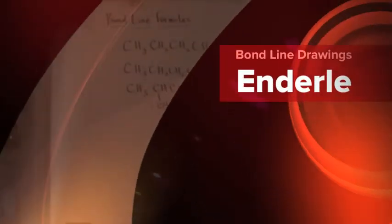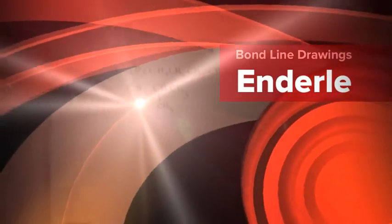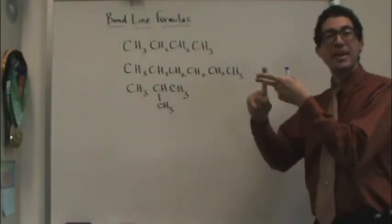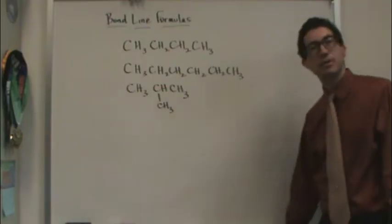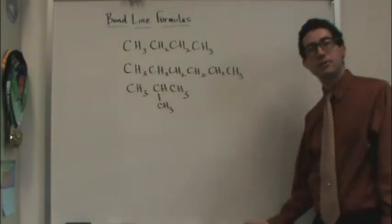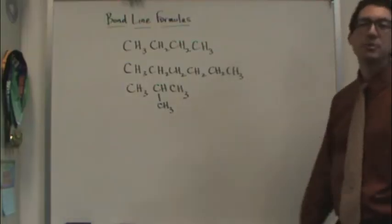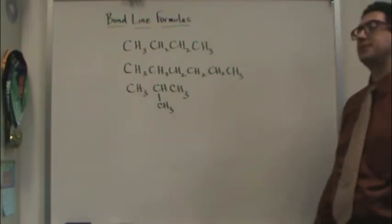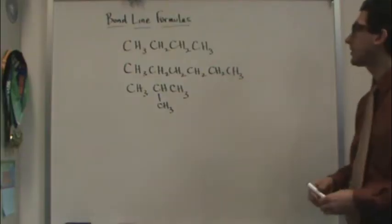We cover something in class called the Bond-Line Formula, and it's a way to take organic compounds — something with carbon and hydrogen in it. These are some pretty simple hydrocarbon or organic compounds, and we write them in a really simple way. Because look at all the ink used there — I don't want to waste all that ink, so I need to save a little time.